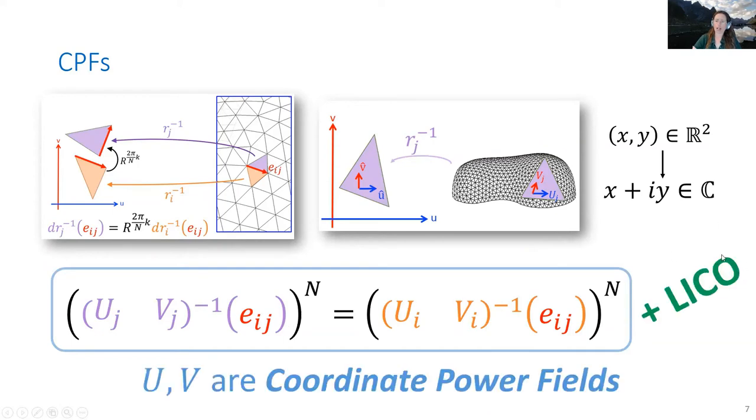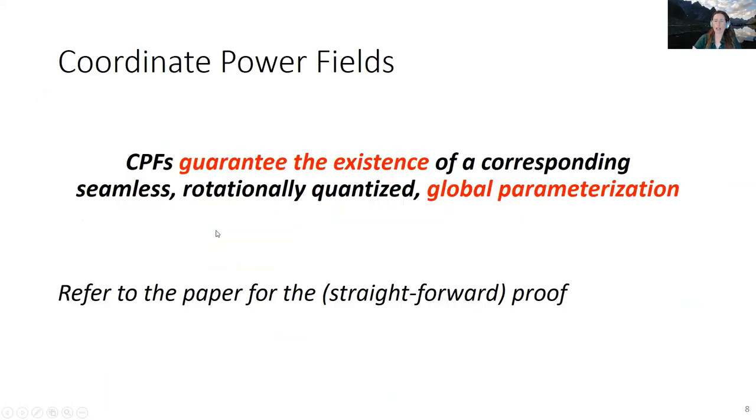We also require a non-degeneracy constraint of linear independence between the two planar vector fields. If these conditions hold, then U and V are coordinate power fields, and they guarantee the existence of a corresponding seamless rotationally quantized global parametrization. The proof is quite straightforward.